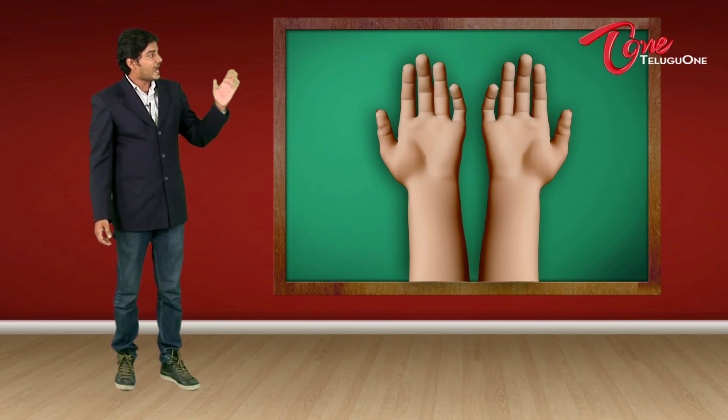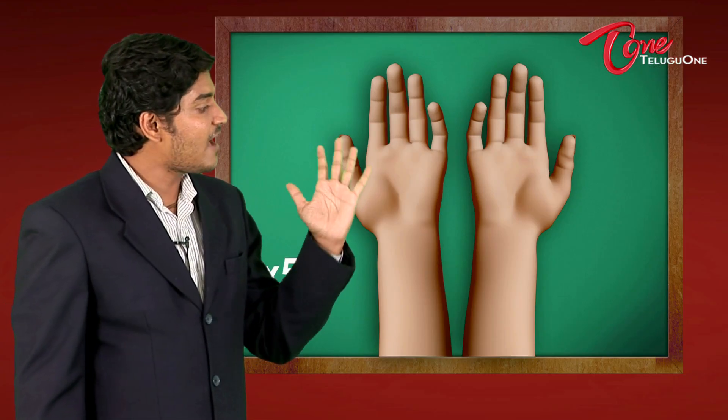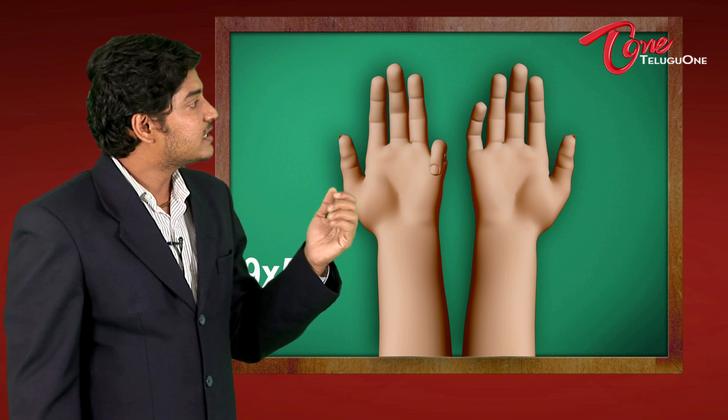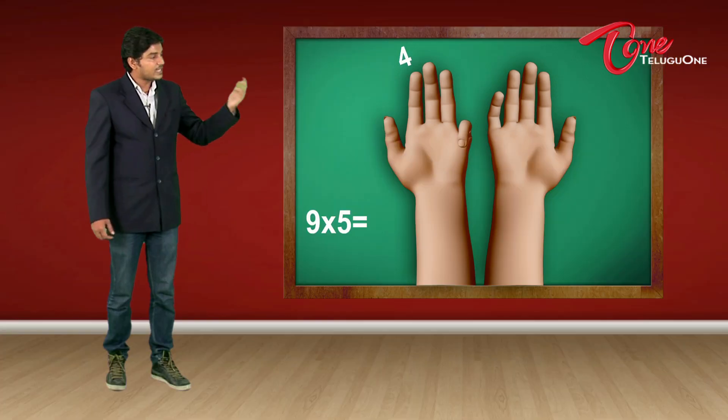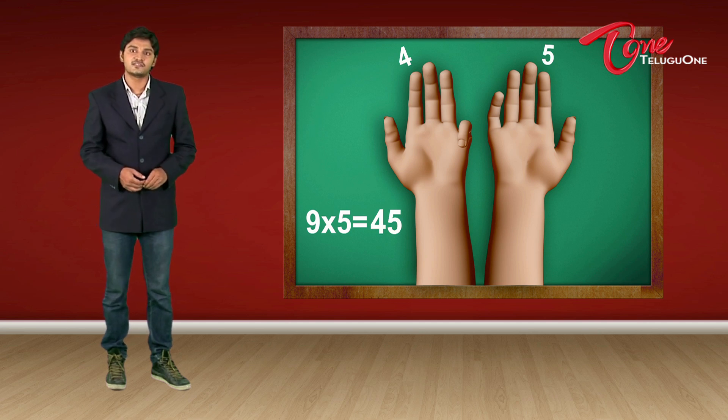So you have my hands on the board and the numbers written on my fingers. Suppose I want 9 times 5. I'm going to close my 5th finger. That is my little finger on my left hand. So how many fingers are there before 5? 1, 2, 3 and 4. And then on the other hand, I have 5. So the answer is 45. So 9 times 5 is 45.